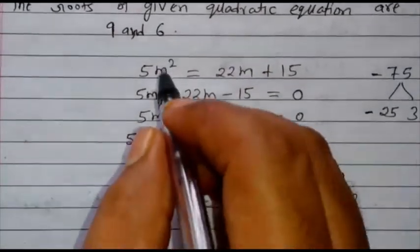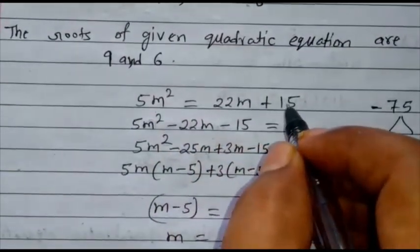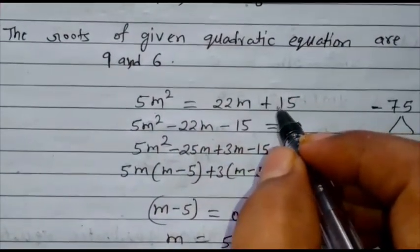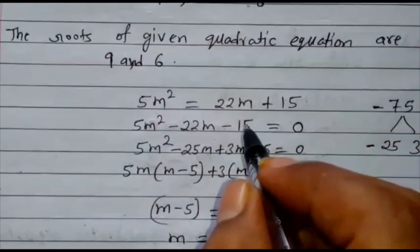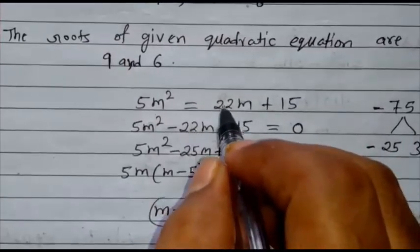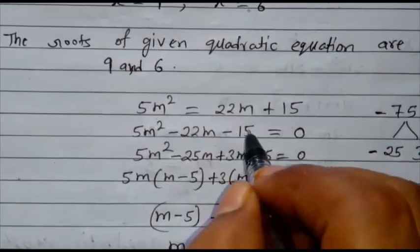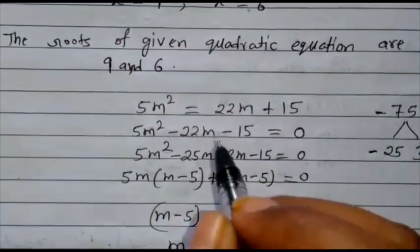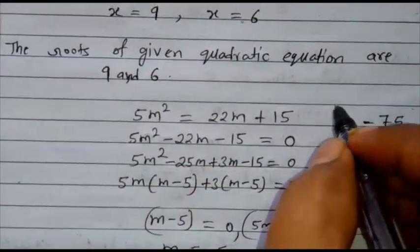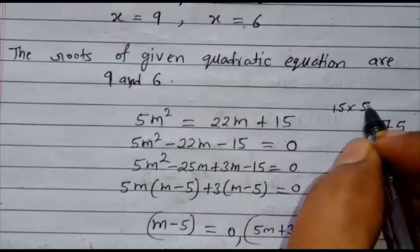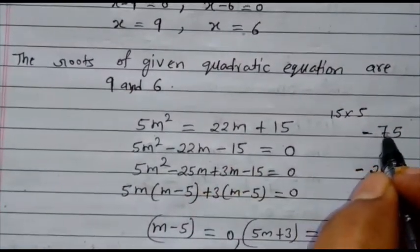Now question number 4. What is the question? 5m² equals 22m plus 15. First, write the equation in standard form. Taking terms to the left-hand side: 5m² minus 22m minus 15 equals 0. Here the coefficient is 5 and the constant is 15, so multiply: 15 × 5 is 75. The sign is minus, so write minus 75.